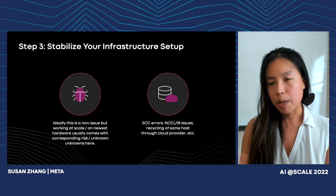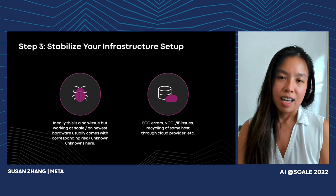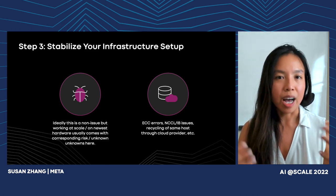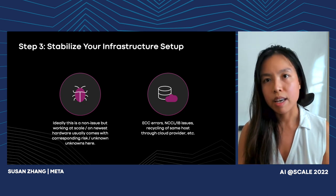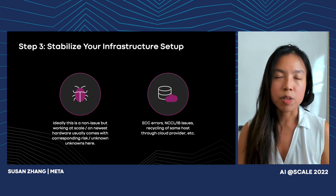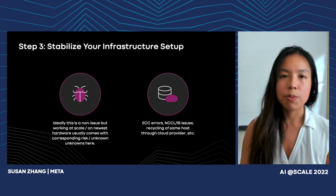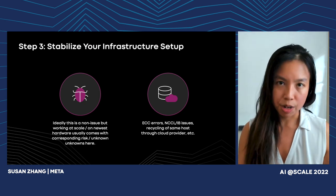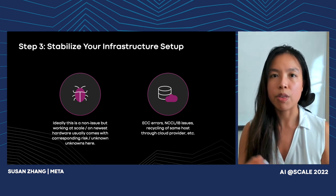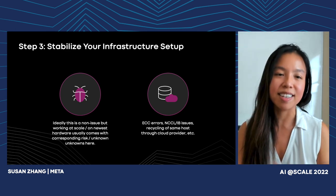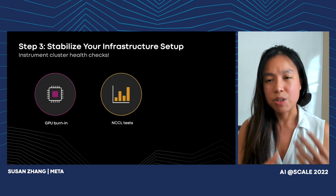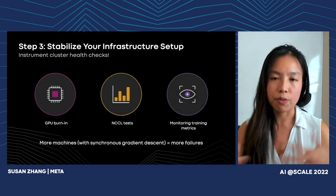Assuming training is stabilized, the next thing to hit us was infrastructure instability. Working at scale with the latest generation of hardware, there were things we didn't foresee. When training back in November, we were seeing ECC errors happening at much higher frequency than previous GPU generations, InfiniBand issues, and even machines we thought we were replacing that just cycled right back in. This led to a bunch of hardware failures, prompting us to develop a suite of cluster health checks to run every time we saw failures, to flag problematic nodes.